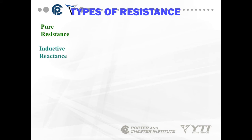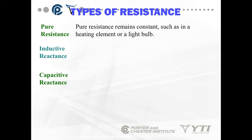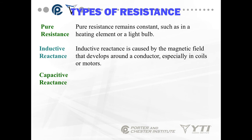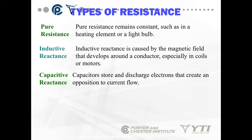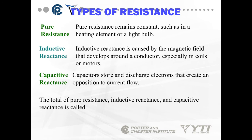We have types of resistance to talk about: pure resistive, inductive resistance, and capacitive resistance. Pure resistance remains constant, such as a heating element or a light bulb. Inductive resistance, or reactance, is caused by the magnetic field that develops around a conductor, especially in coils or motors. Capacitors store and discharge electrons that create opposition to current flow. The total of pure resistance, inductive reactance, and capacitive reactance is called impedance.